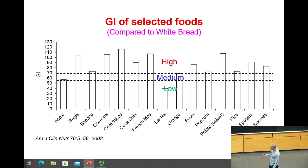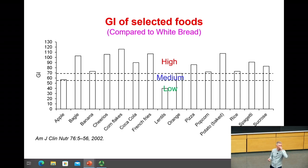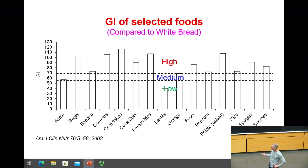We have three classifications: high, medium, and low. If you eat an apple — 50 grams of apple — it falls in the medium range, about 60–70% of what you'd see with bread or table sugar. Now look at a bagel — it goes way over, a very high glycemic response. A banana is also classified within the high range, lower than sugar and bread, but still high.